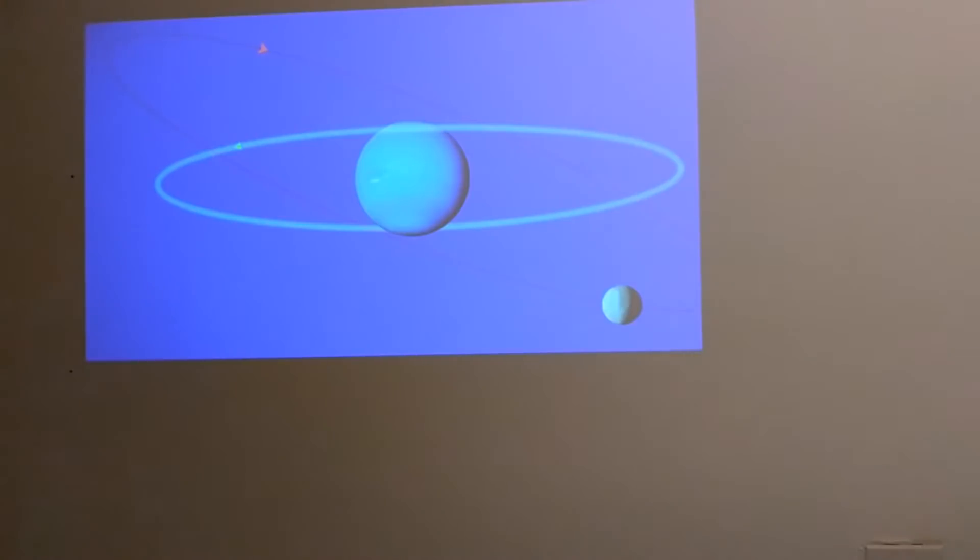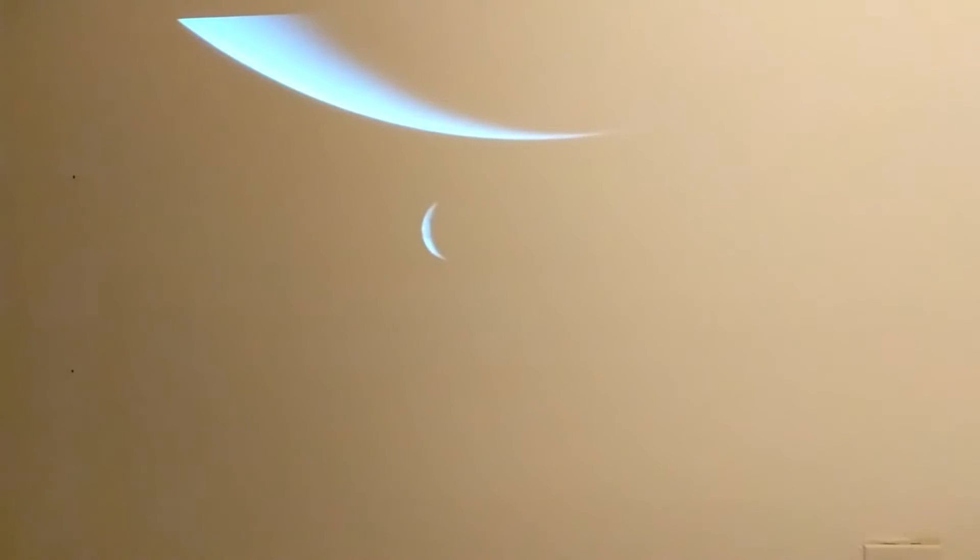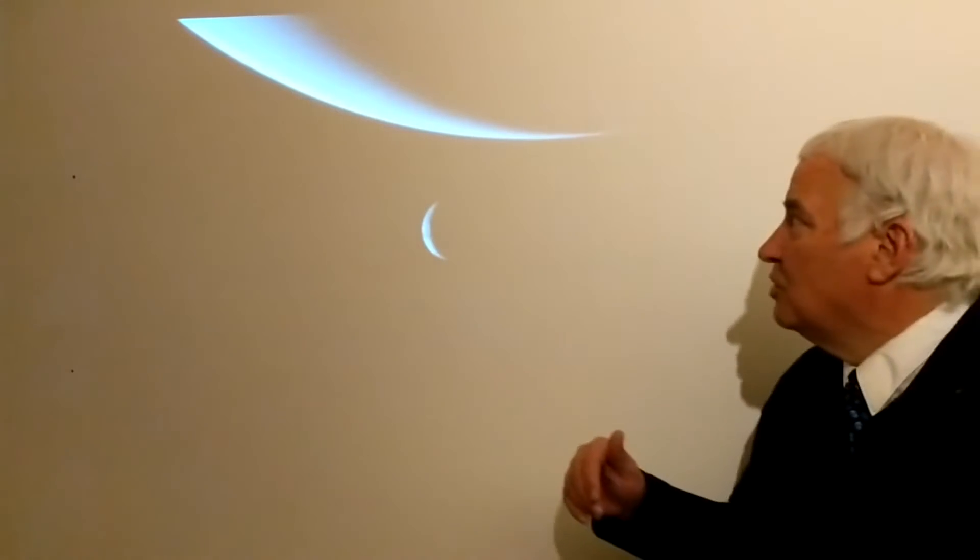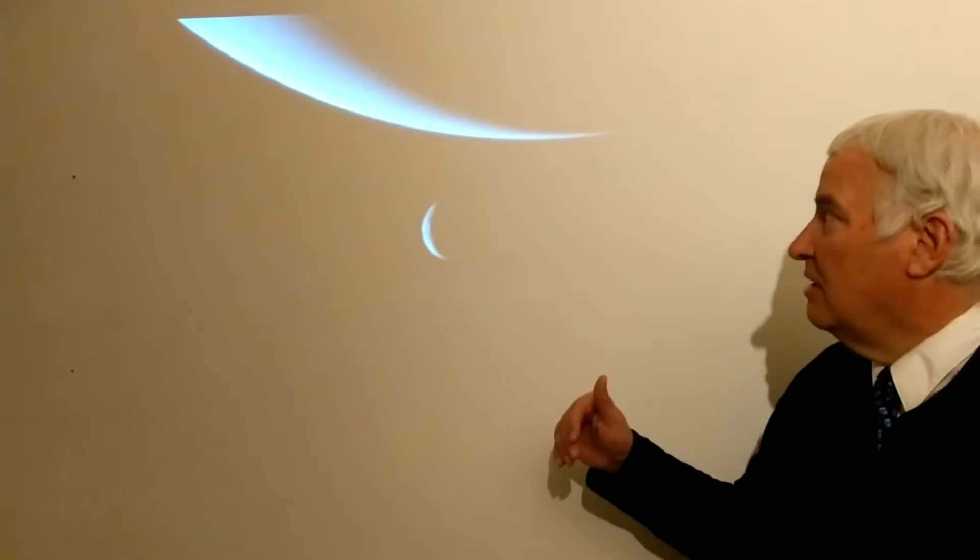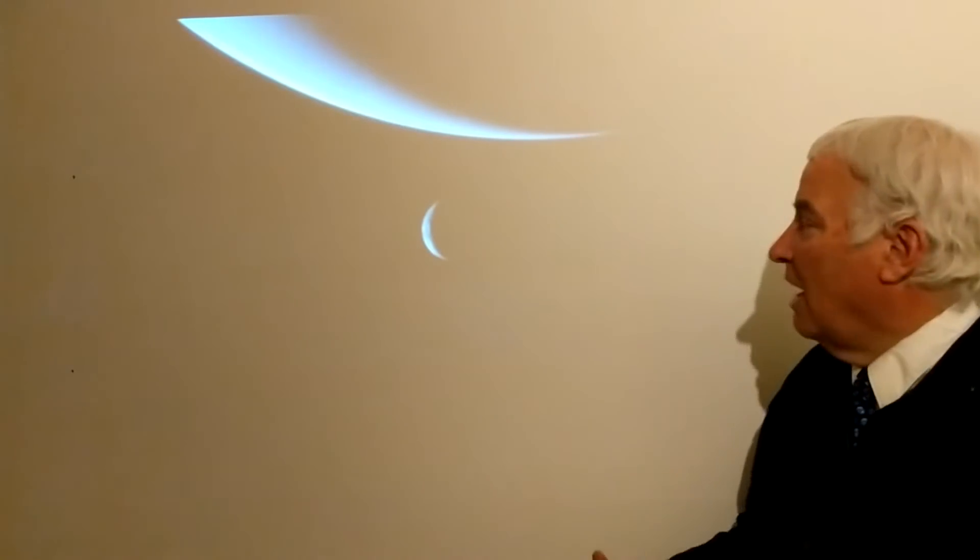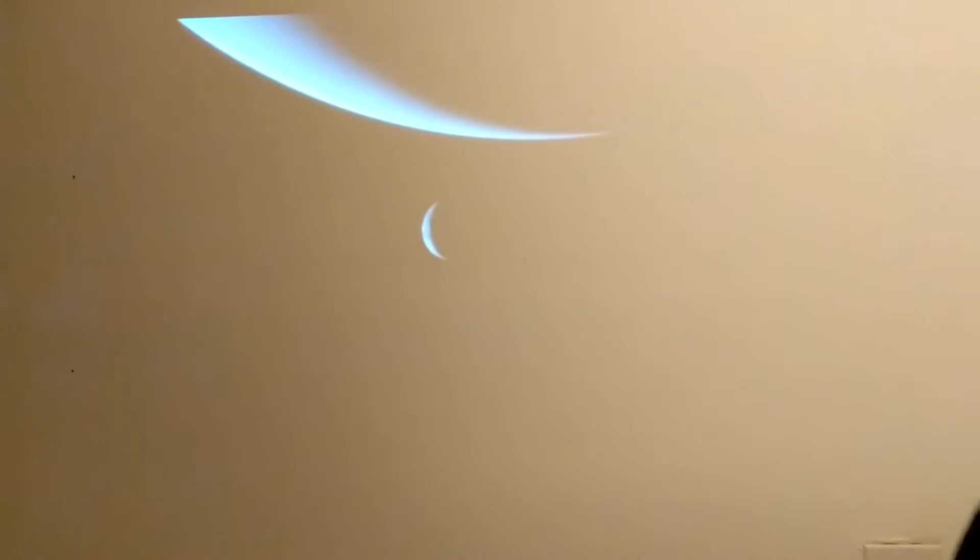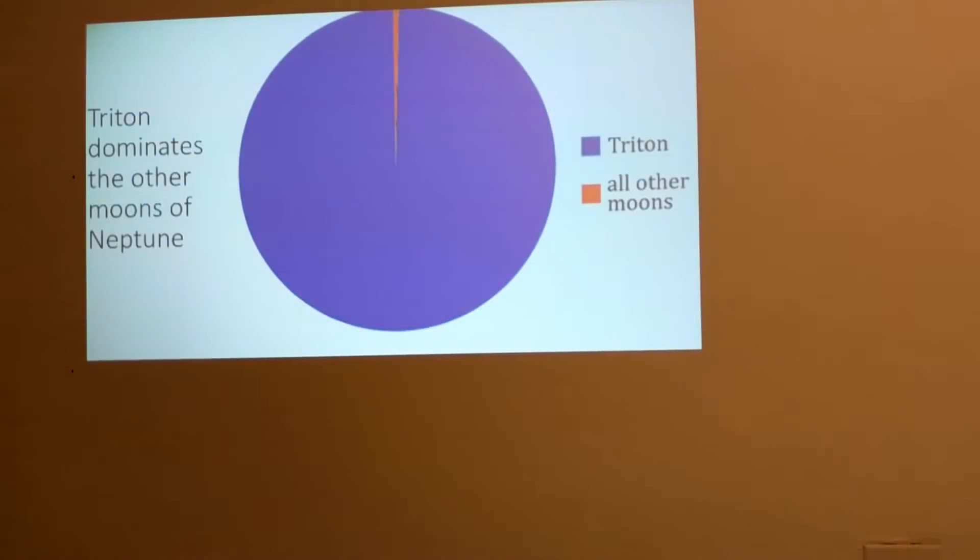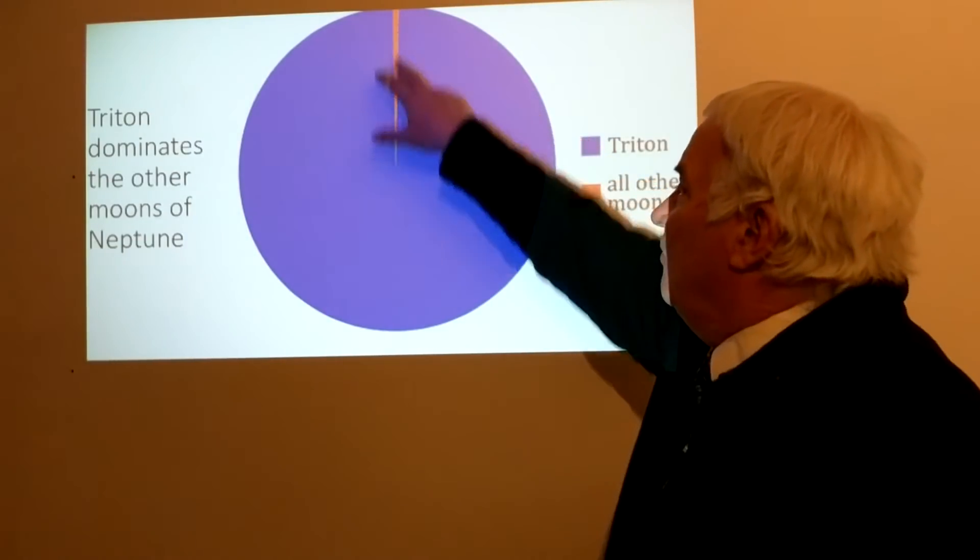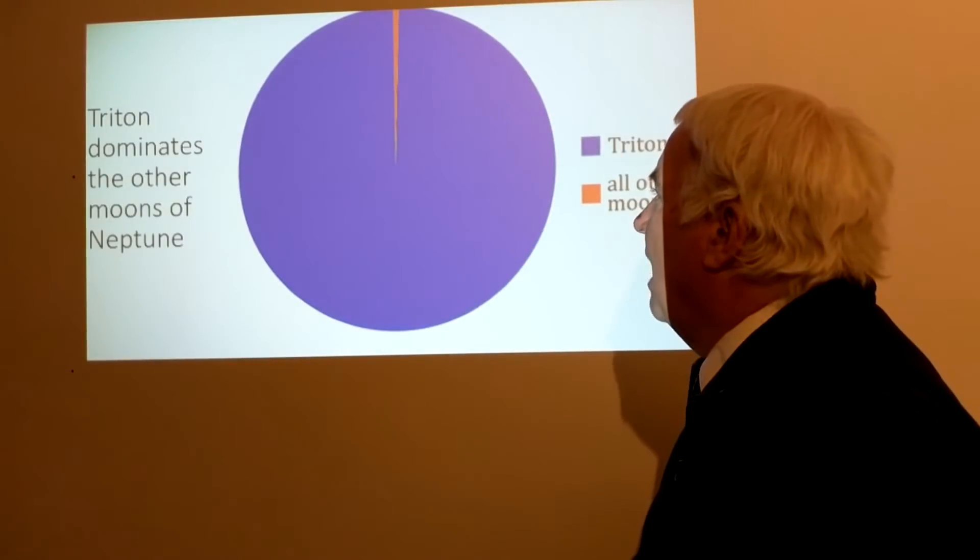Here is a nice image taken by the Voyager 2 spacecraft. Voyager 2 is the only spacecraft to visit Neptune and therefore also Triton. We can see that we have the crescent shapes there for both phases. Triton dominates all of the other moons of Neptune. If we look by mass, all of the other moons of Neptune added together form this very small amount of mass, and Triton is all the rest.